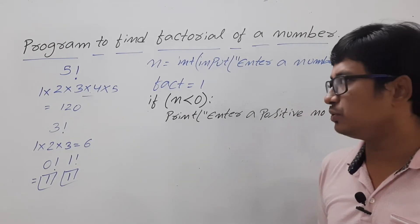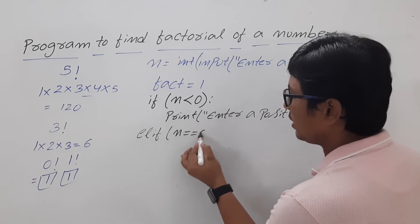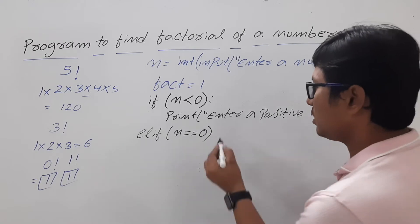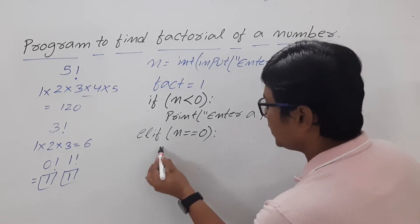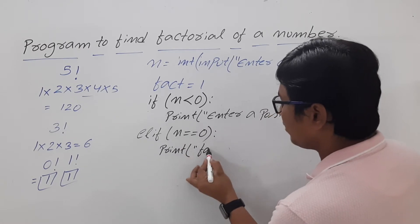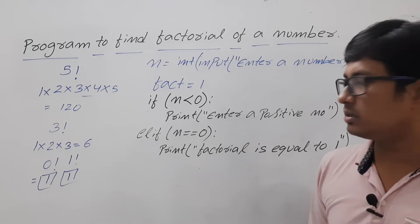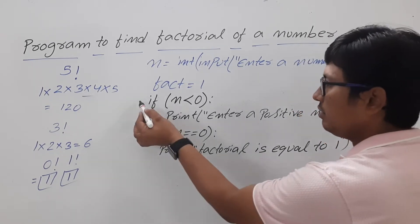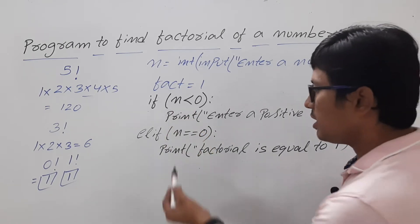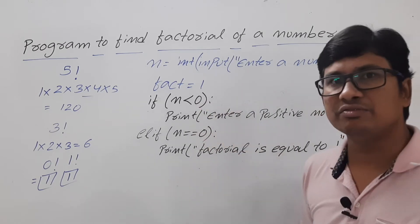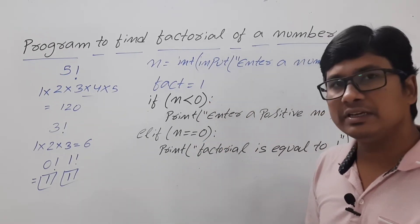If n is equal to 0, I can use the equality comparison operator (==) and print that factorial is equal to 1. This is the output I want to display using else-if. If the first condition is true, this will be printed. If not, it will compare the next condition — whether n equals 0. If both conditions fail, it means the number is positive.